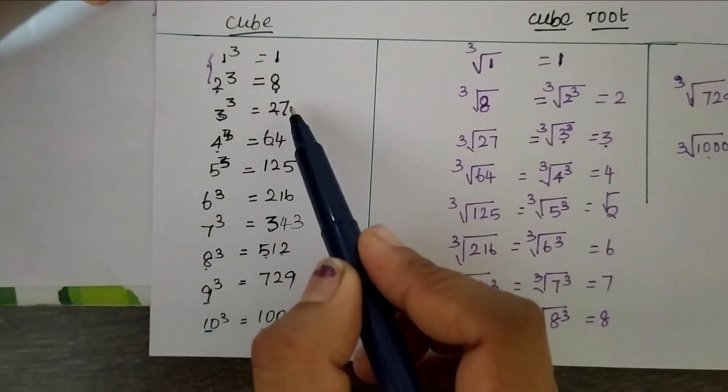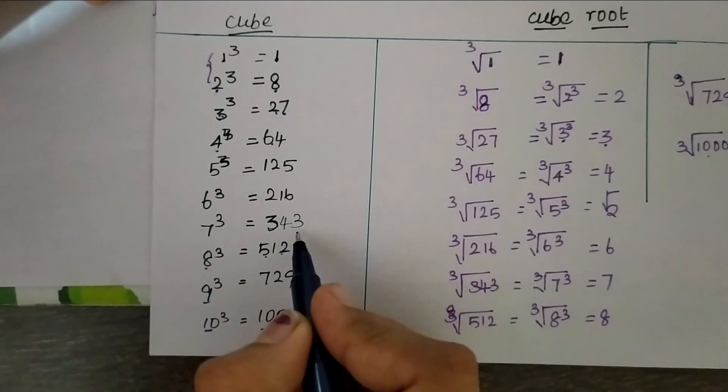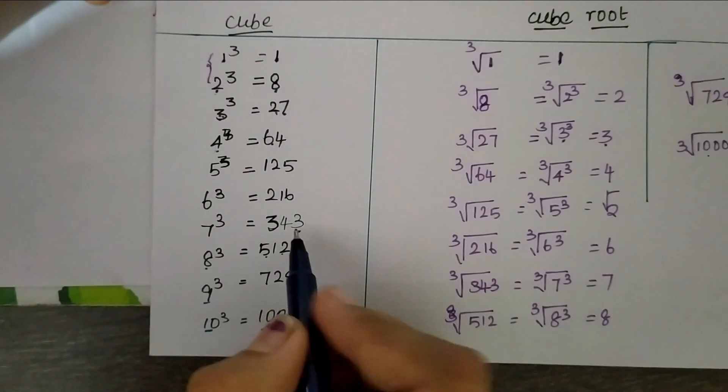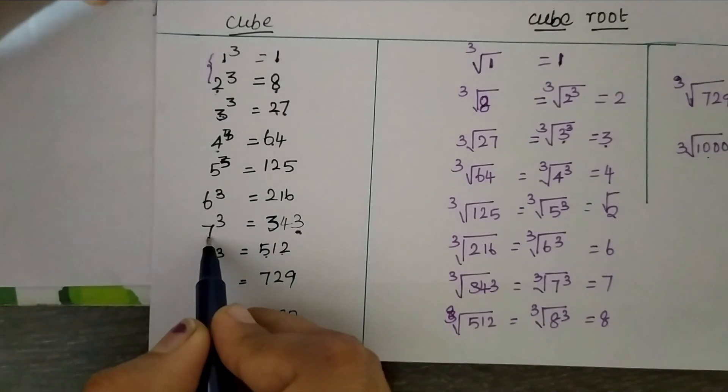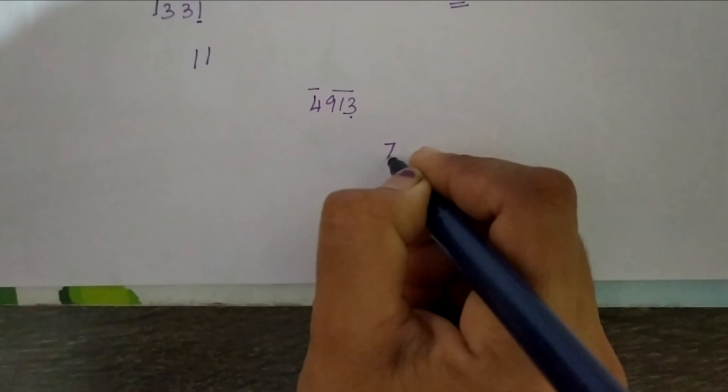Here we have to check which number has 7 in its unit's place. Here we have number 3 in unit's place. Its corresponding cube number is 7. So, put 7.